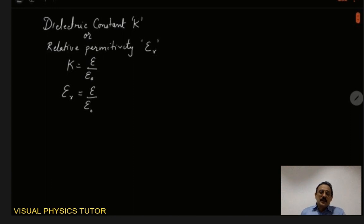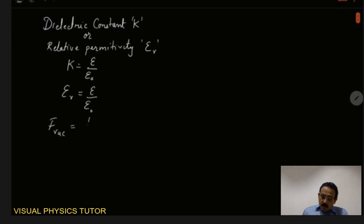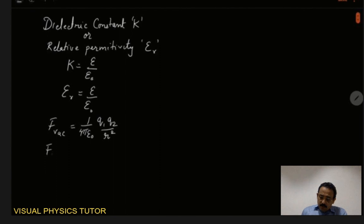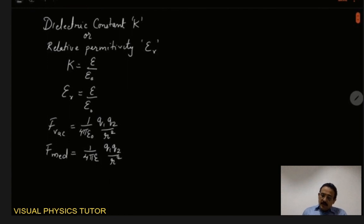Since it is a ratio, it doesn't have any unit. We had already learned that the electrostatic force existing between two electric charges when placed in vacuum is given by the equation: F vacuum is equal to 1 by 4 pi epsilon naught, times q1 q2 by r squared. Similarly, for the same charges placed at the same distance in a particular medium,